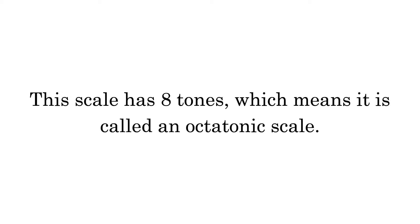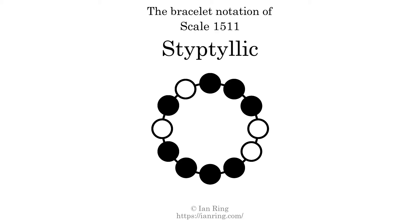This scale has 8 tones, which means it is called an octatonic scale. This is a bracelet notation diagram of scale 1511. The shaded circles represent tones that appear in the scale, and they are read clockwise, starting at the top.